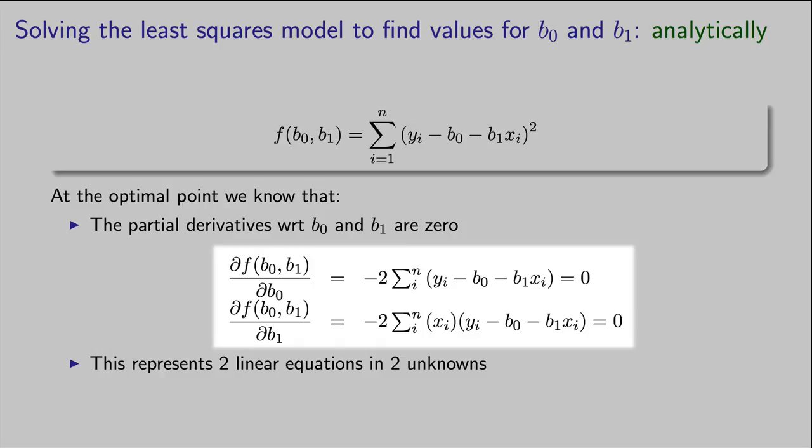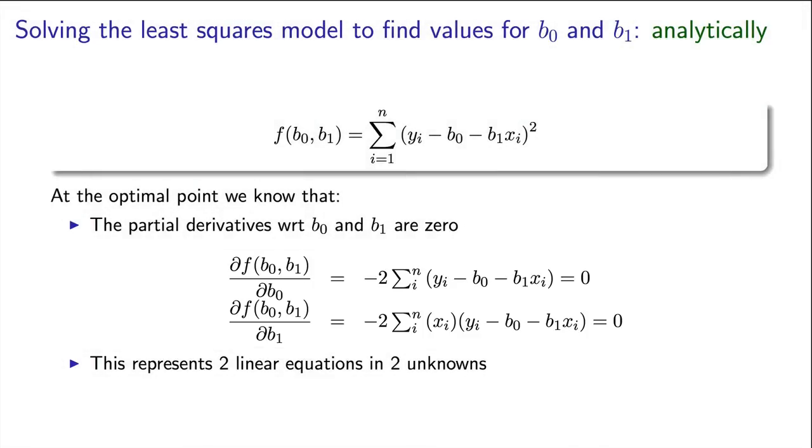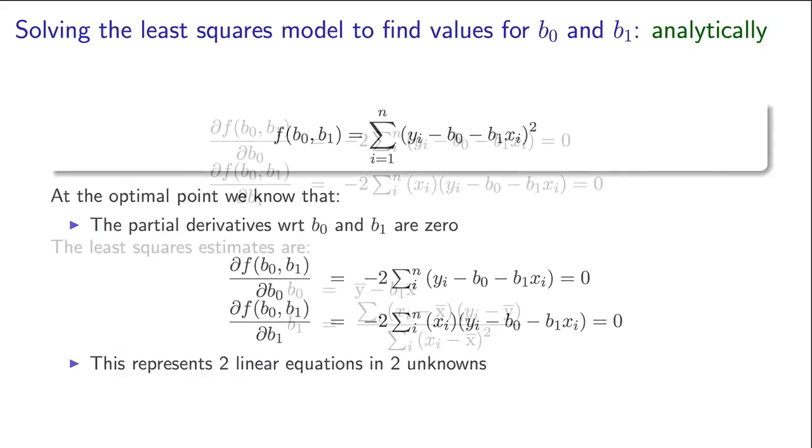These represent two equations in two unknowns. In fact, these are two linear equations in two unknowns. And right there you see why least squares is so widely used. Computers work very fast with linear equations. This set of linear equations can be solved very quickly, and in fact, you can even solve it by hand.